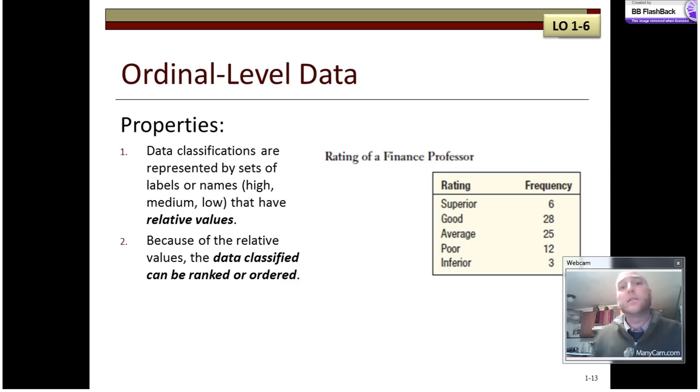Other scales like this might be things like finance professor rating, superior, good, average, poor, inferior. Is the difference between superior and good the same as the difference between good and average? If that interval is not the same or unknown as it is here, then we might say that this is what we should say that this is ordinal level data.